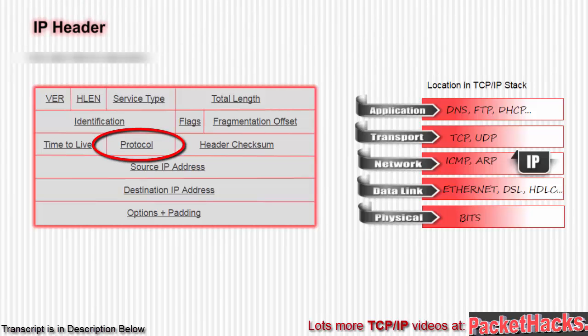The next field is protocol, which is 8 bits. This defines the upper-layer protocol: a value of 6 indicates TCP, 17 indicates UDP, and 1 indicates ICMP. There are over 100 more, some important but most pretty obscure.